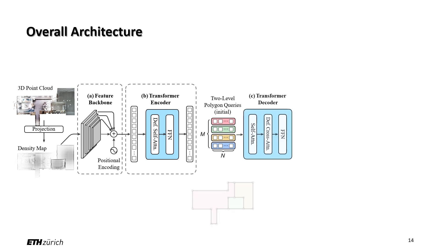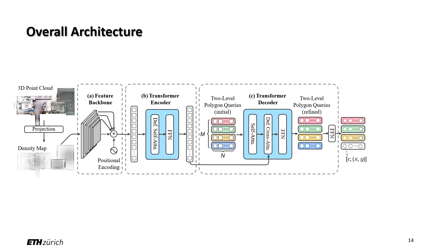A transformer decoder takes as input our polygon queries and additionally attends to the encoder output. Each query has explicit 2D coordinates and is refined layer by layer. A feedforward network predicts an additional binary label for each query indicating its validity. It accommodates varying numbers of rooms and corners. During training, we introduce a polygon matching strategy to guarantee the optimal assignment between predicted and ground truth polygons.